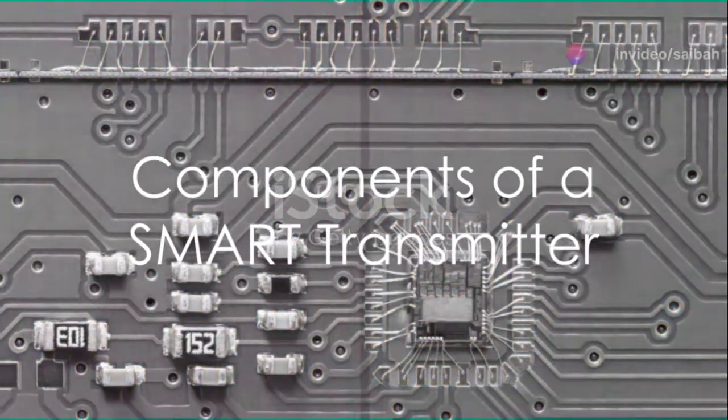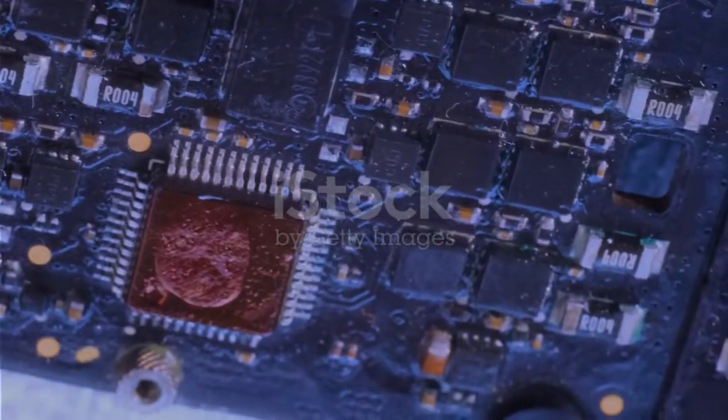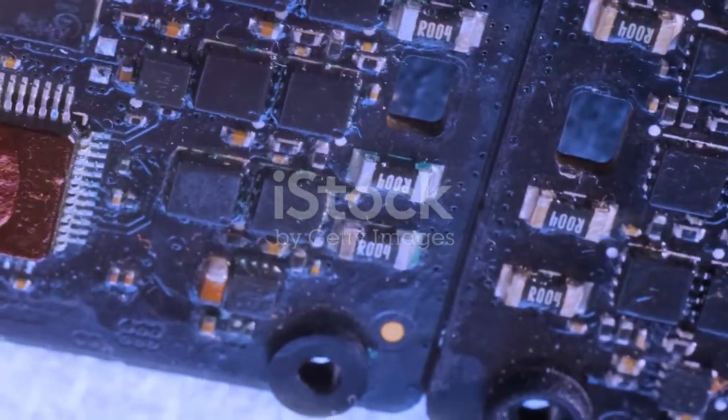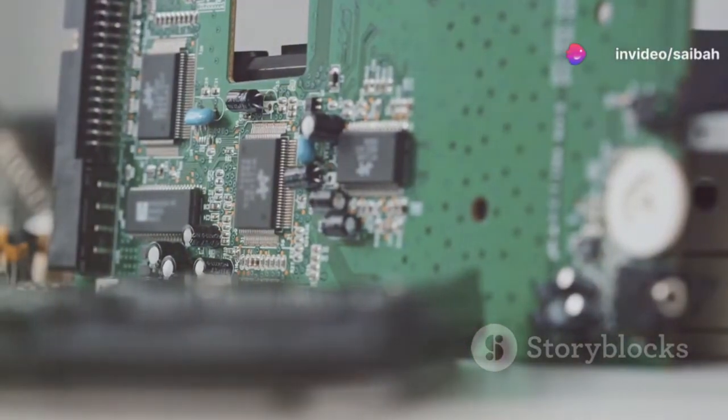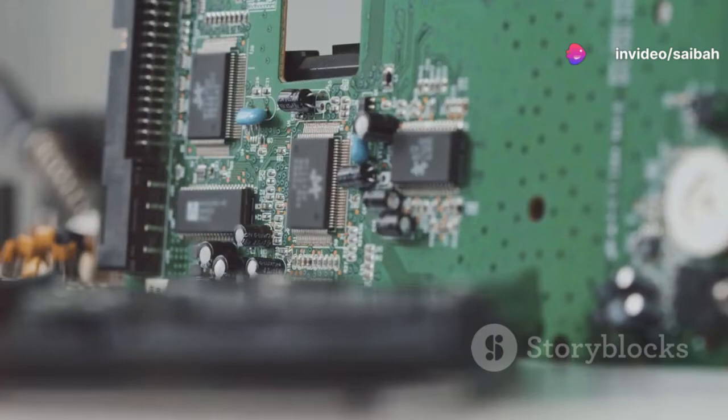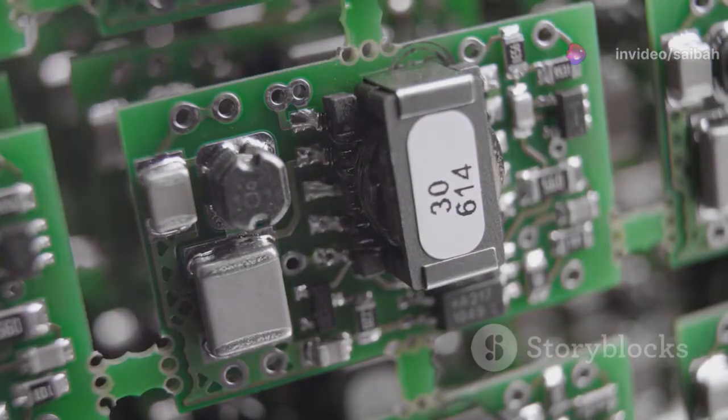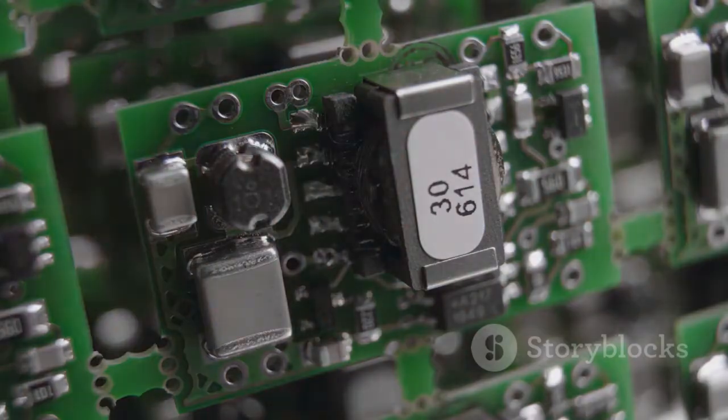What makes up a smart transmitter? At the heart of any smart transmitter, you'll find four key components. The sensor or input circuitry senses the environment, while the microprocessor processes this information. Memory stores valuable data for future reference, and the communication block facilitates digital dialogue.